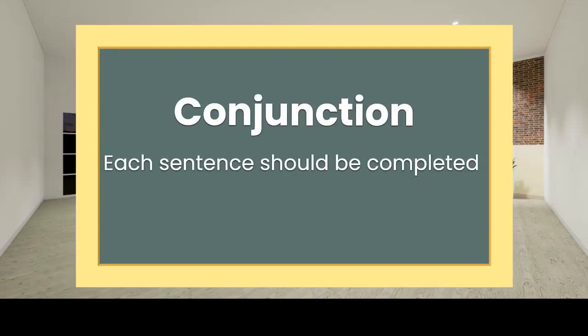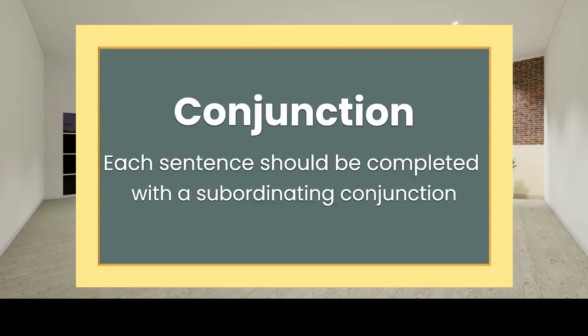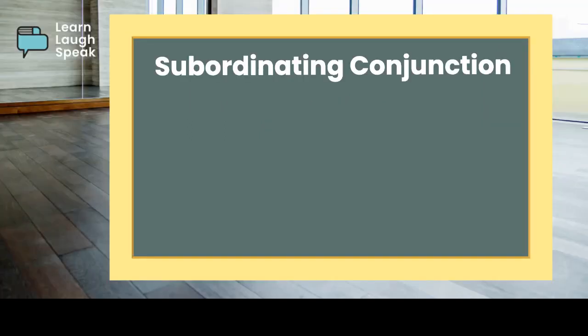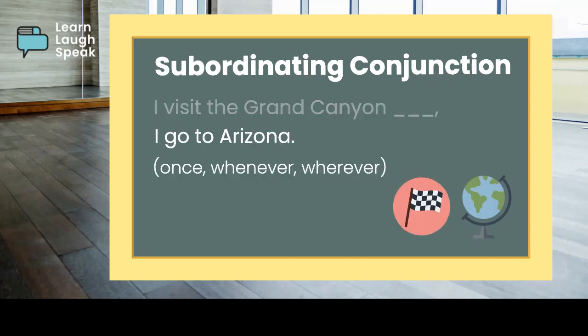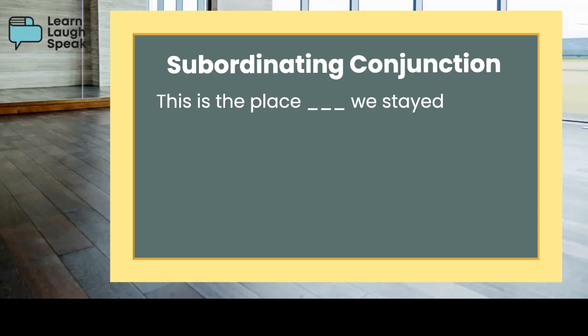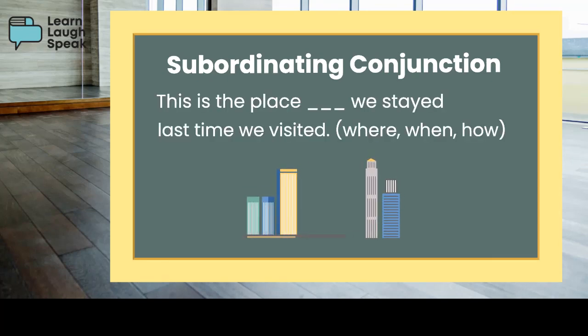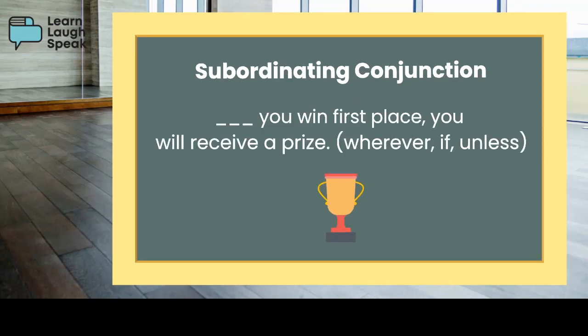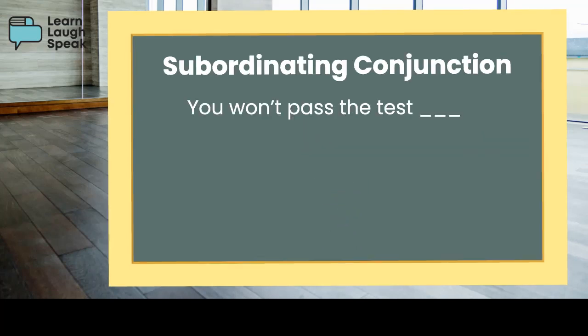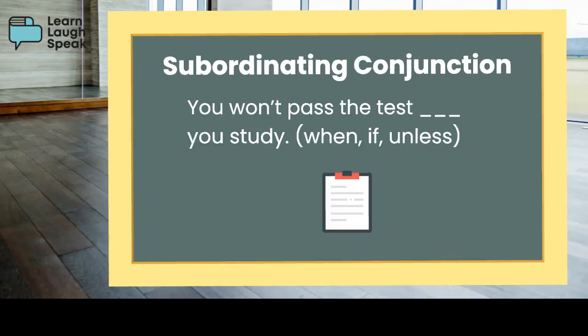Part 2: each sentence should be completed with a subordinating conjunction. I visit the Grand Canyon when I go to Arizona. This is the place where we stayed last time we visited. If you win first place, you will receive a prize. You won't pass the test unless you study.